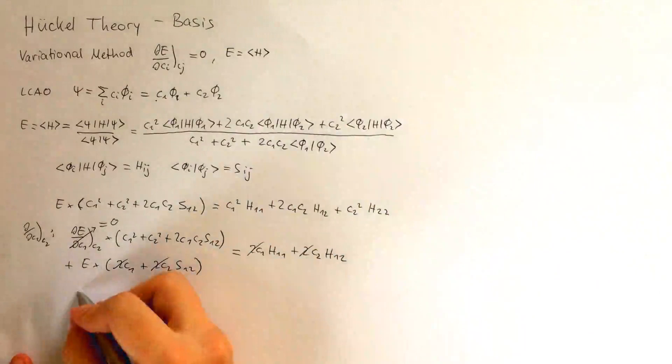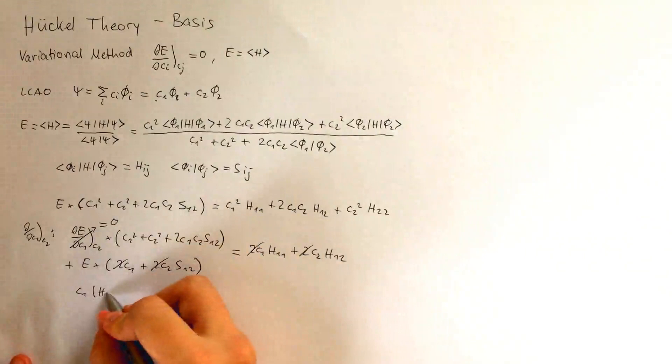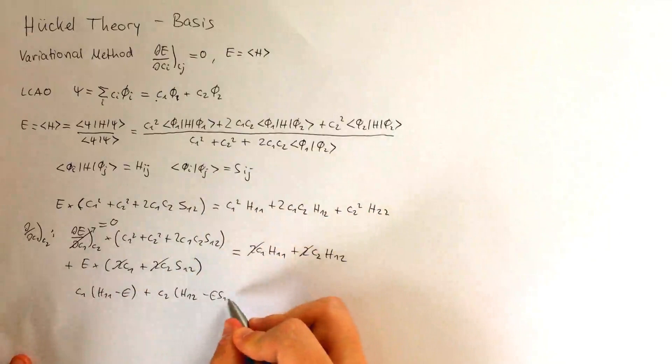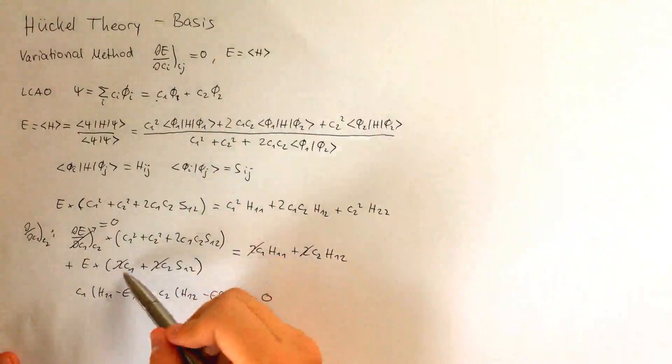And then now, let's collect terms for C1 and C2. So, I'll write C1 and then H11, and from this side we get E, so H11 minus E, plus C2 H12 minus E S12. And then this entire thing is equal to zero, since I collected the terms from this side on this side.